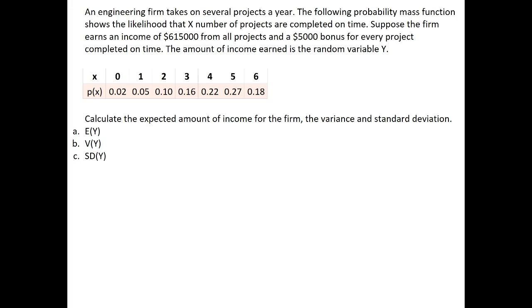Suppose the firm earns an income of $615,000 from all projects, so that's their base fee, and a $5,000 bonus for every project that's completed on time. The amount of income earned is the random variable Y.